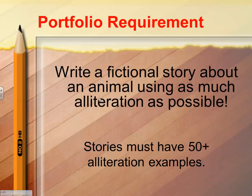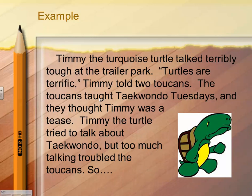Our first poetry portfolio requirement — things students must create that must go in their poetry portfolio binders — is to write a fictional story about an animal using as much alliteration as possible. They must have 50 plus examples of alliteration, and it must have personification throughout this little story. An example of this is shown here; you can pause the video and read it if you need to.